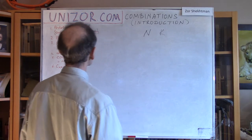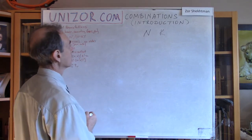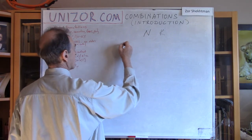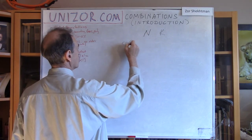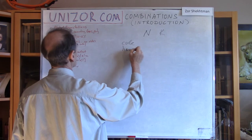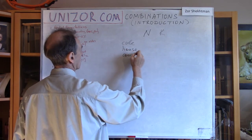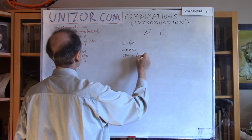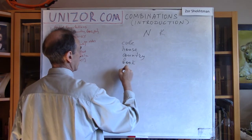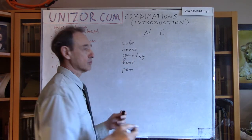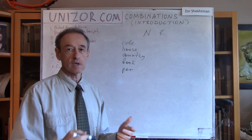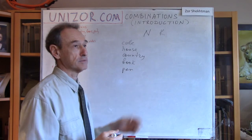Just as an example, let's consider the following five objects: a cube, a house, a country, a book, and a pen. And we're interested in picking two objects out of these five.